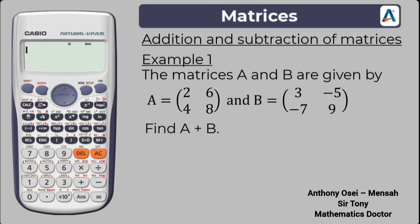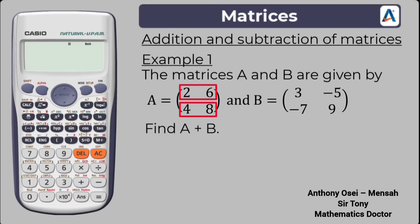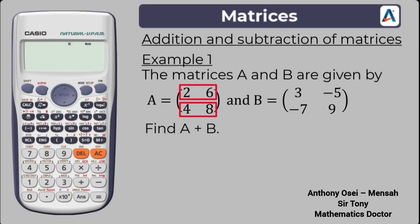The columns are 2, 4, 6, 8 and the rows are 2, 6, 4, 8. The columns are the numbers that range from top to bottom, and the rows are the numbers that range from left to right. Each number in the matrix is referred to as an element. Now let's go ahead and add this matrix using the calculator.